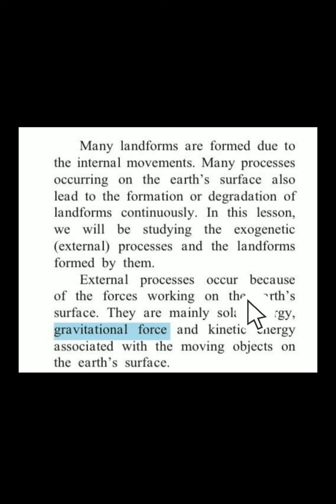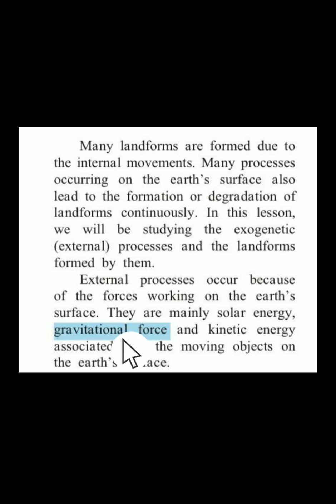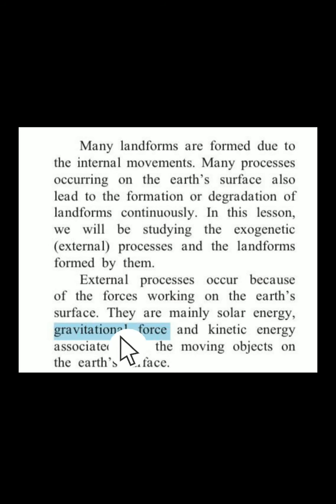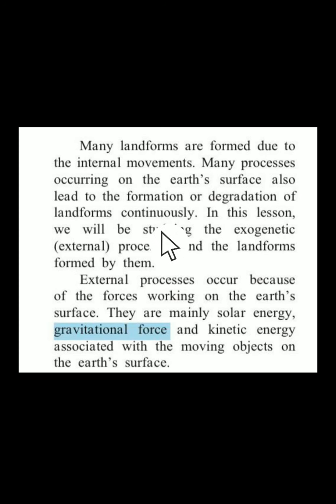External processes occur because of forces working on the earth's surface. In geography, we have basically three of them. First is solar energy — that is the sun. Then, gravitational force — something which is pulling towards the earth; whatever you throw up automatically comes down because of gravitational force. And also kinetic energy, which is a thing set in motion — something which is moving. Because of these three energies — solar, gravitational, and kinetic — occurring on the earth's surface, we can get either formation or degradation of new landforms.